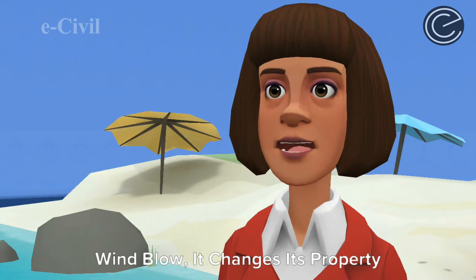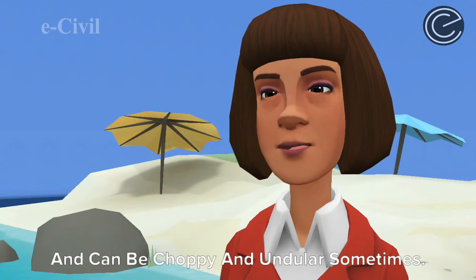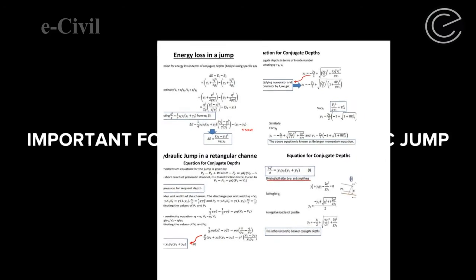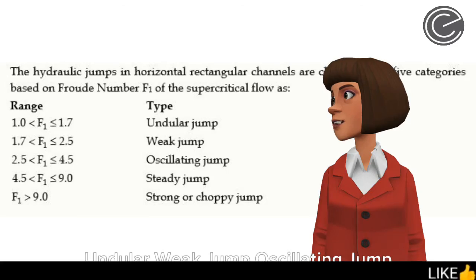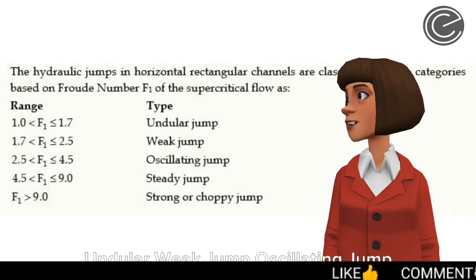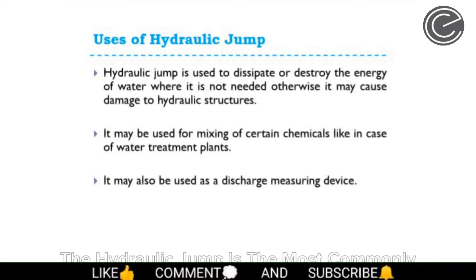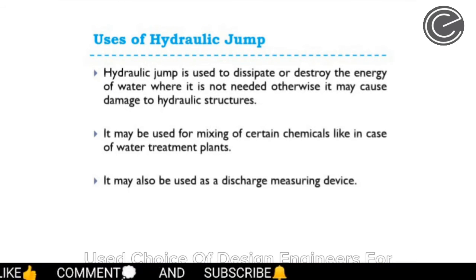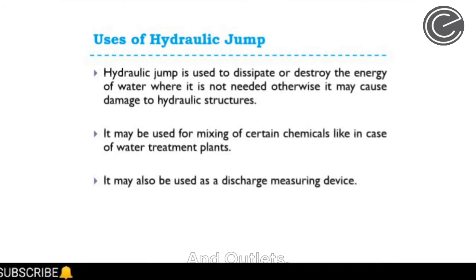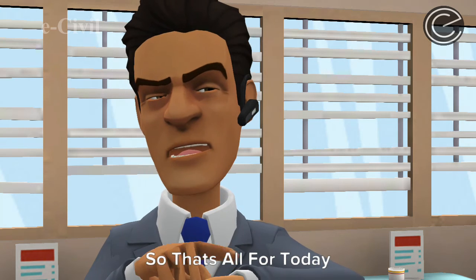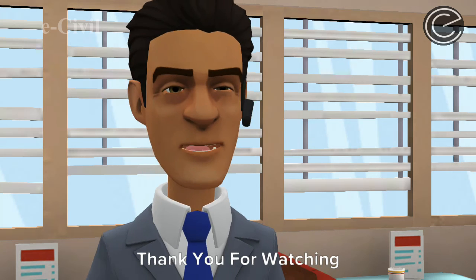Based on wind directions and heavy wind blow, it changes its properties and can be choppy and undular — sometimes undular, weak jump, oscillating jump, steady jump, and many more. The hydraulic jump is the most commonly used choice of design engineers for energy dissipation below spillways and outlets. That's all for today, thank you for watching.